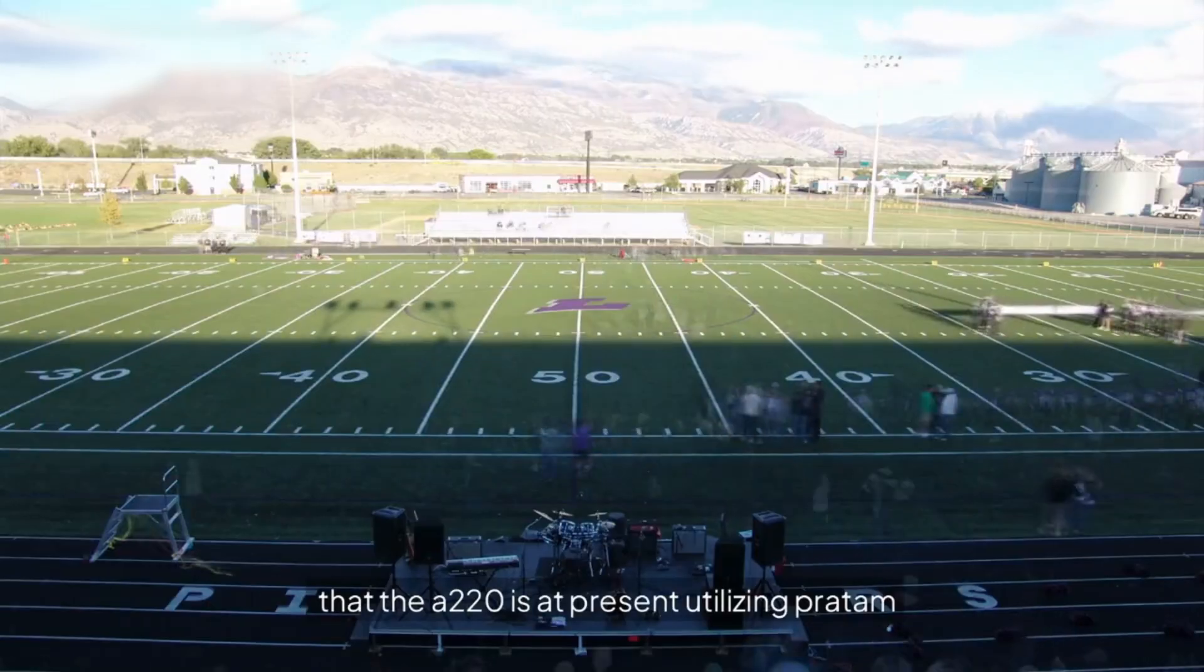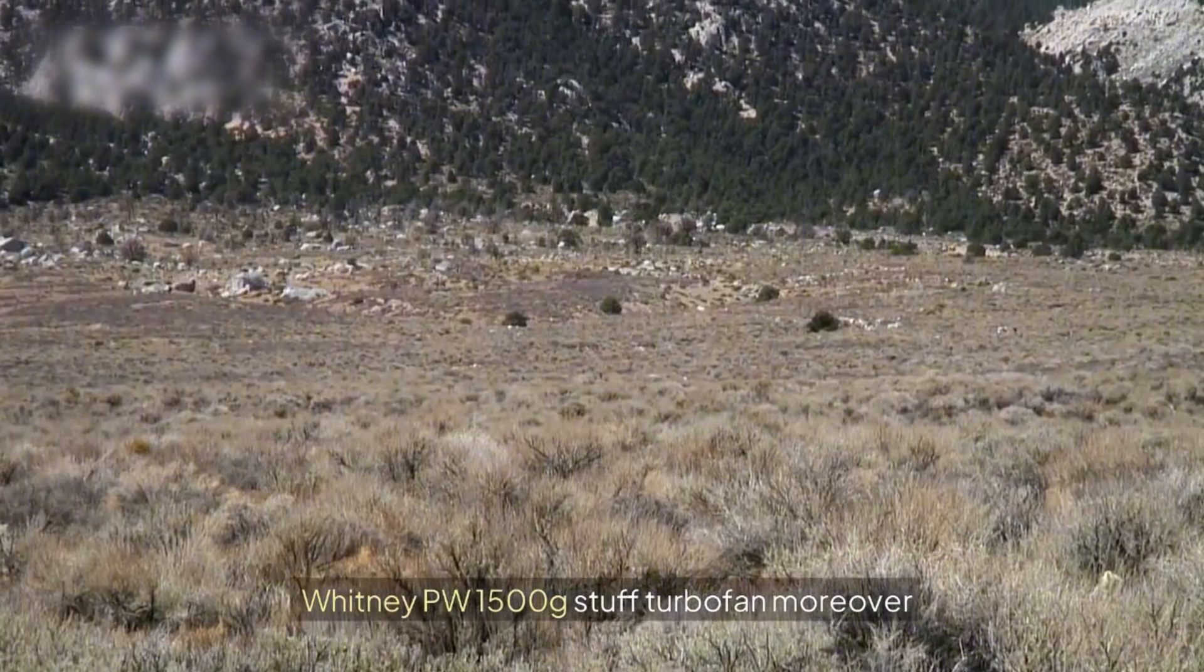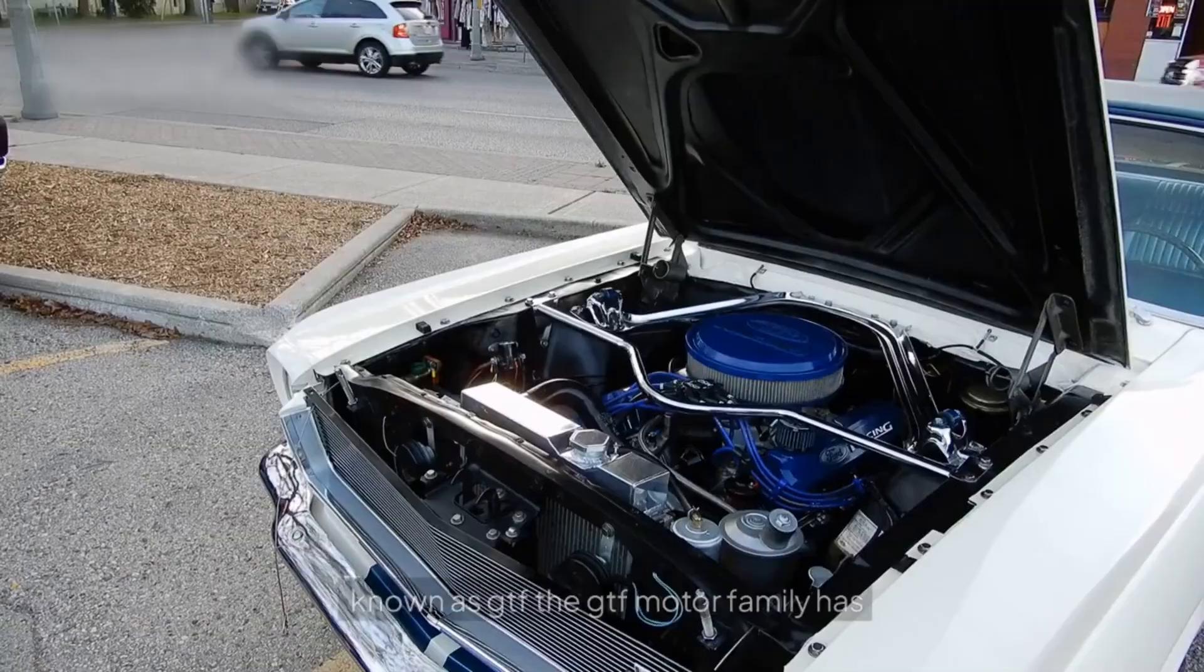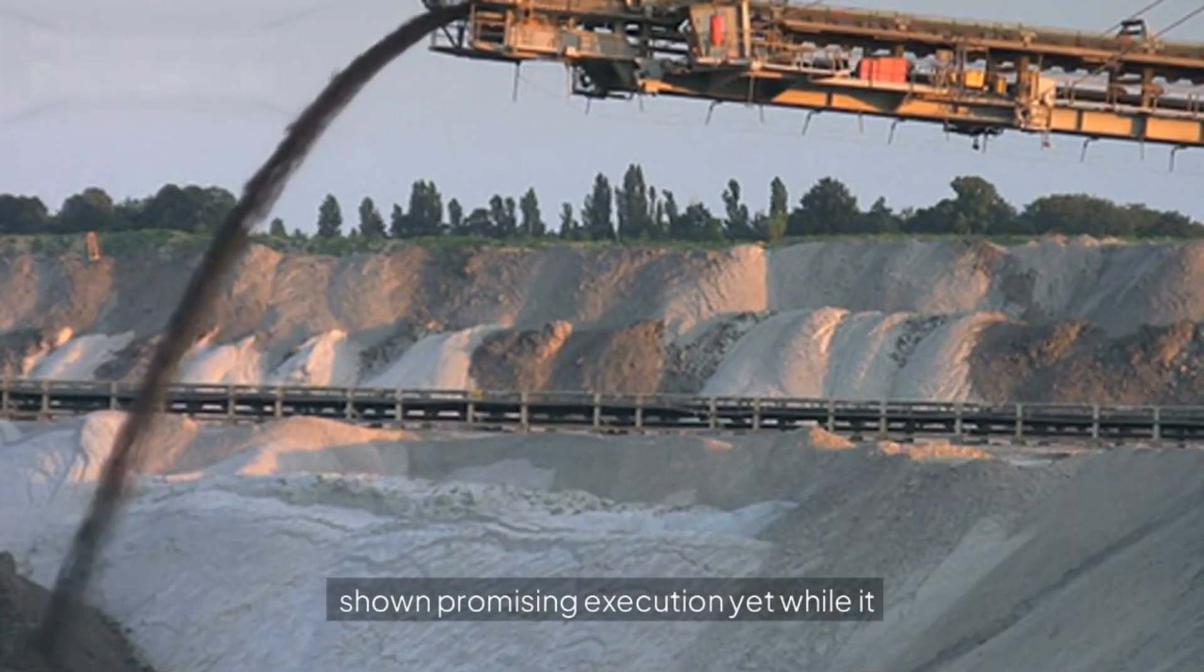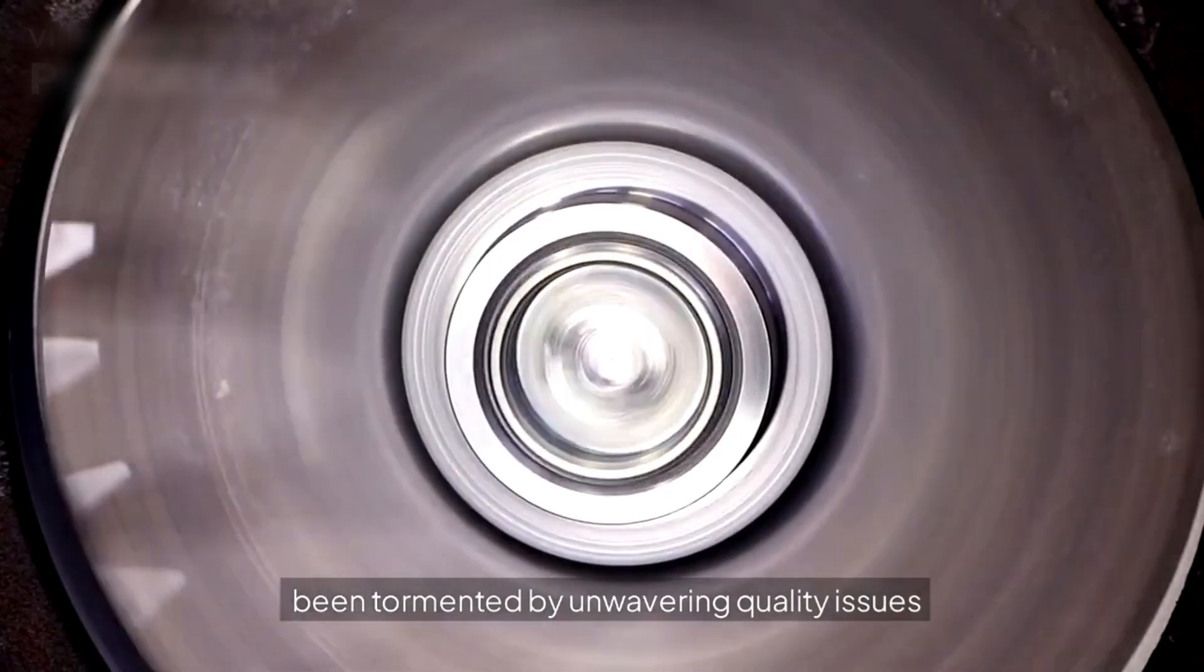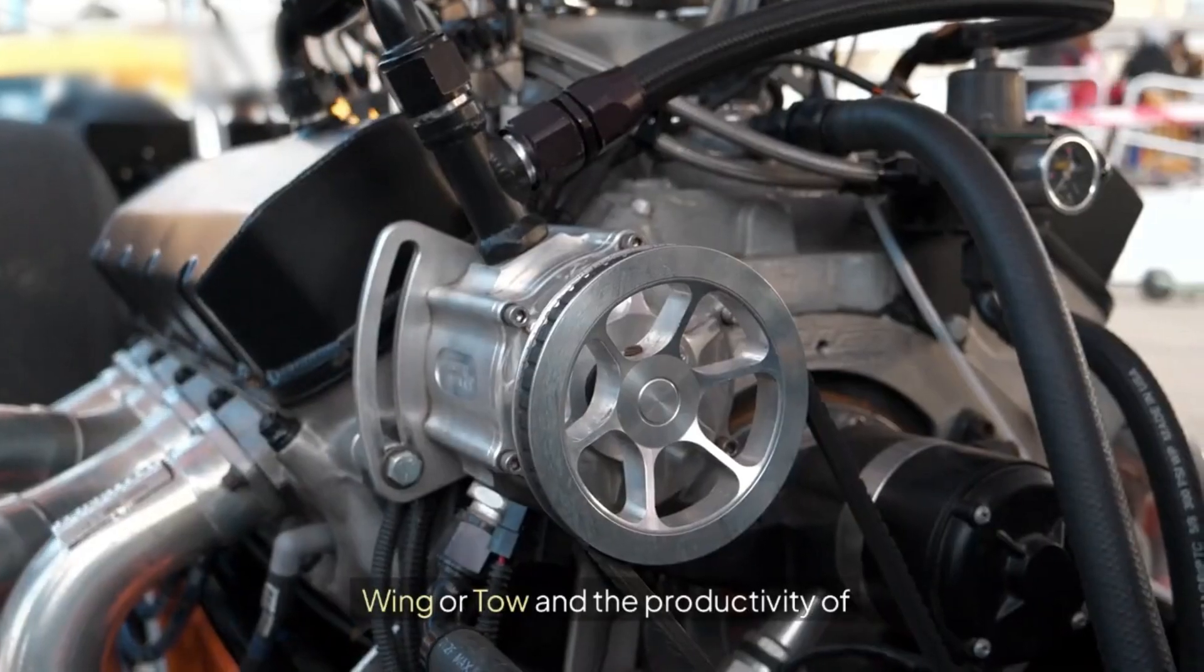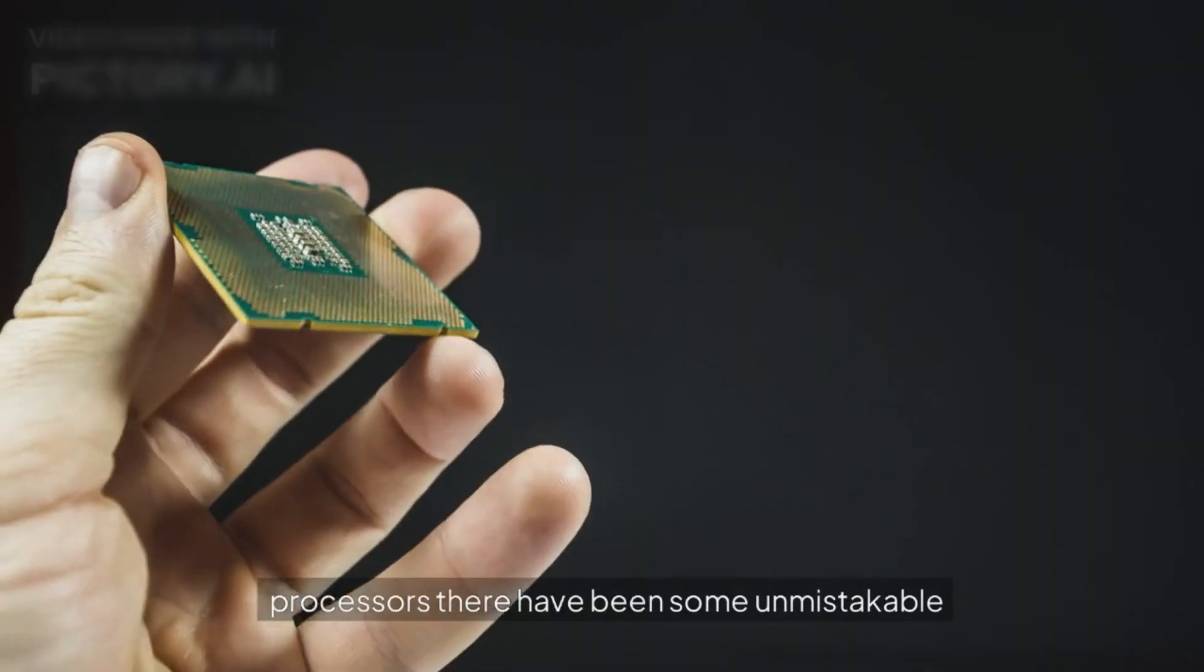The clearest issue is that the A220 is currently using Pratt & Whitney PW1500G geared turbofan, also known as GTF. The GTF motor family has shown promising execution, yet while it offers amazing eco-friendliness, it has been tormented by unwavering quality issues, specifically when estimated by time on wing, and the proficiency of support fix and update, or MRO processes.